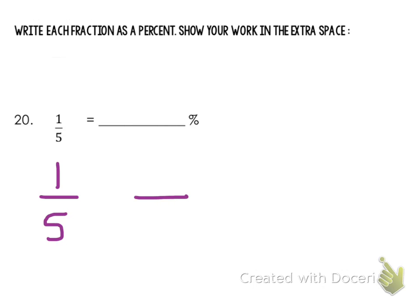Well, how do we do that? We can multiply 5 times 20 to get a denominator of 100. But if you multiply the denominator by something, you also have to multiply the numerator by it. Okay, so 1 times 20 is 20. That would mean that our percent would be 20%.